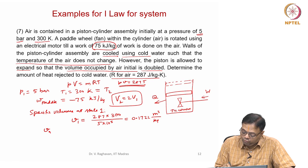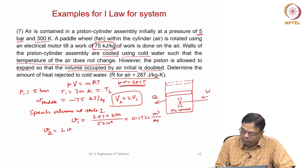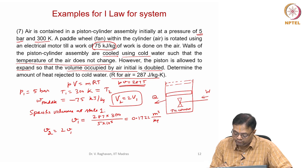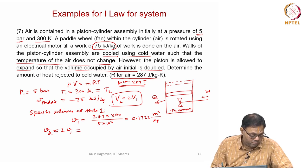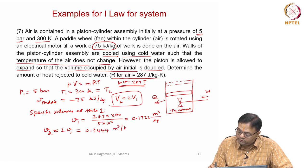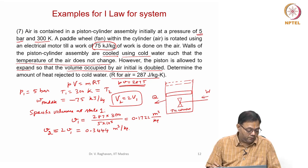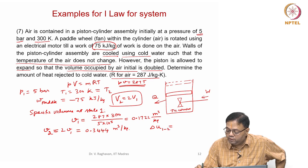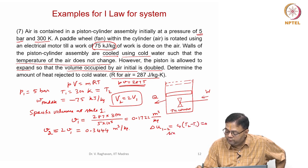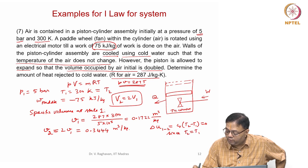Since mass is constant, v2 = 2 × v1, which is 0.3444 m³/kg. Now, delta u = cv × (T2 − T1) = 0, since T2 = T1 for this isothermal process.